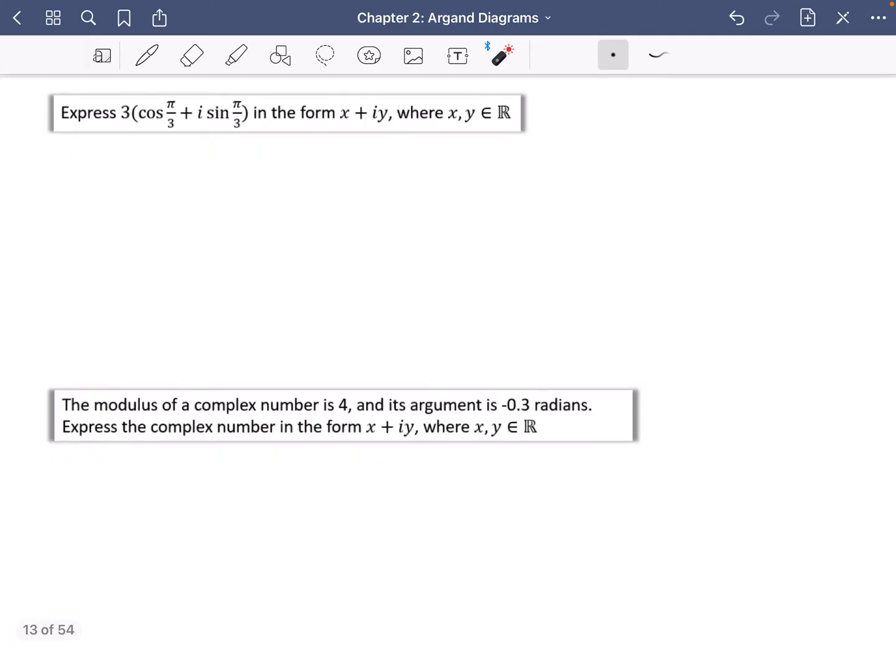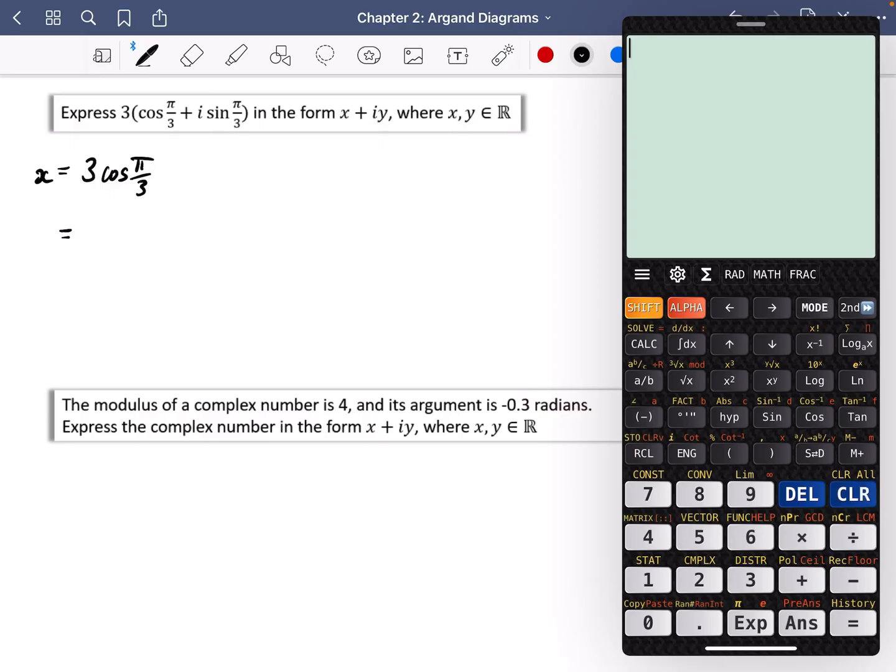Okay, let's have a look at this one. This time they've given it to us in modulus argument form, and we're going to want to put it back into the x plus iy form. This one's actually really easy, you can just type this into your calculator. So just for the x part, you can just do three multiplied by cos of pi over three. I'm hoping you know what cos of pi over three is off the top of your head. Cos of pi over three is the same as cos 60, so you should know that it's just going to be a half. So if I do cos of pi over three, you get a half, multiplied by three, and you get three over two.